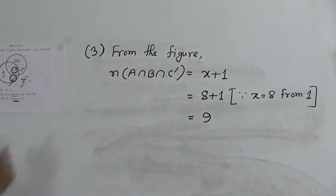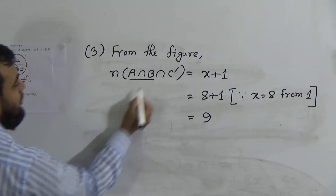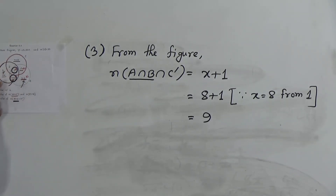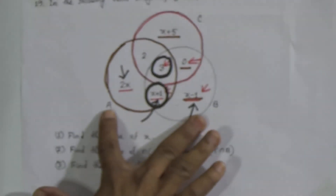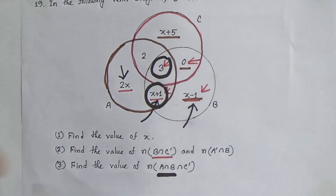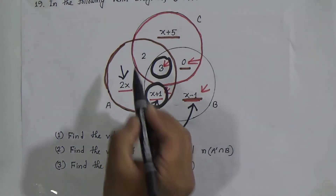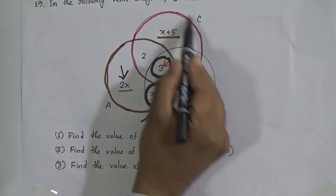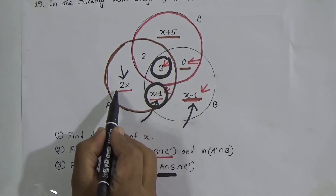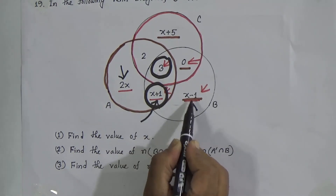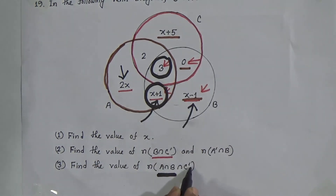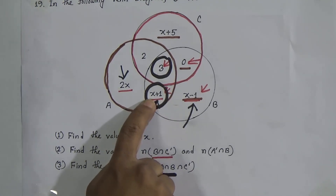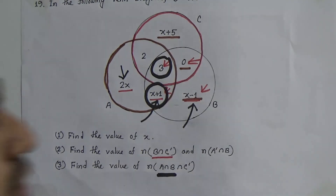To recap: A∩B is the common portion of A and B, which contains elements with number of elements 3 and (x+1). We intersect with C complement — the outer part of the upper circle C — which contains 2x, (x+1), and (x−1). The intersection gives only x+1, confirming n(A∩B∩C') = 9.